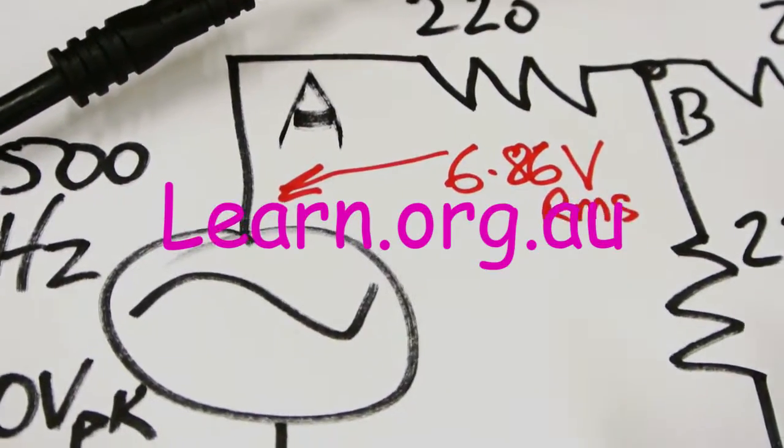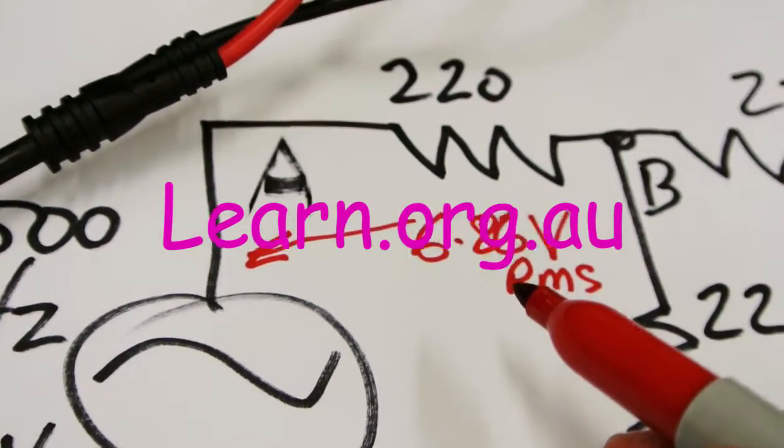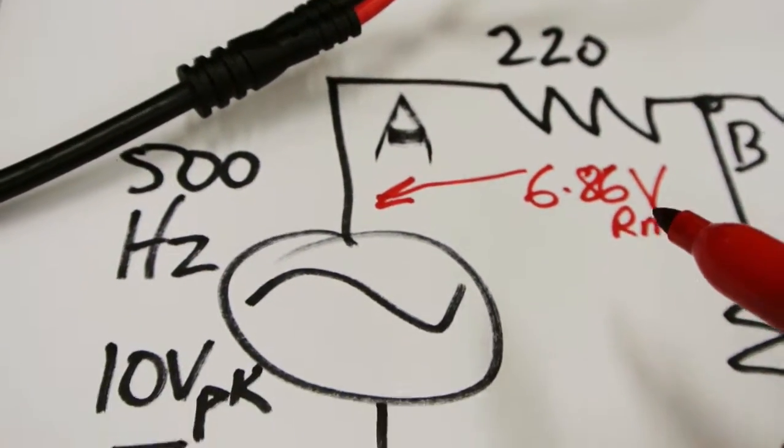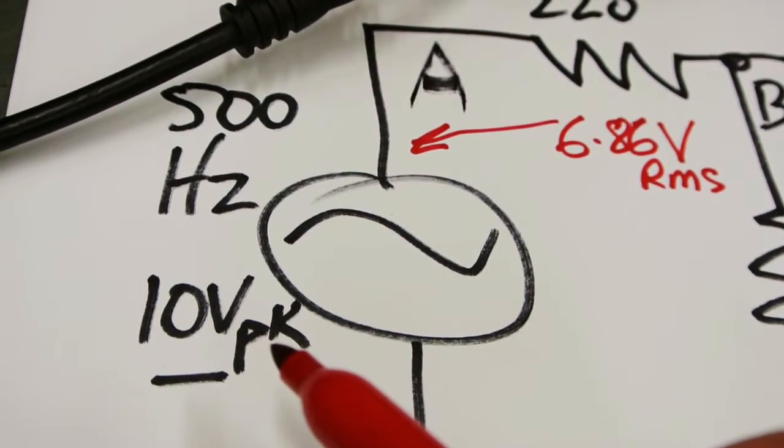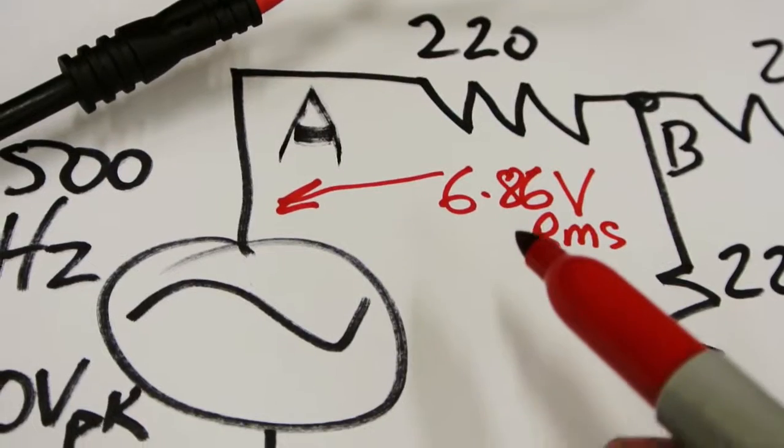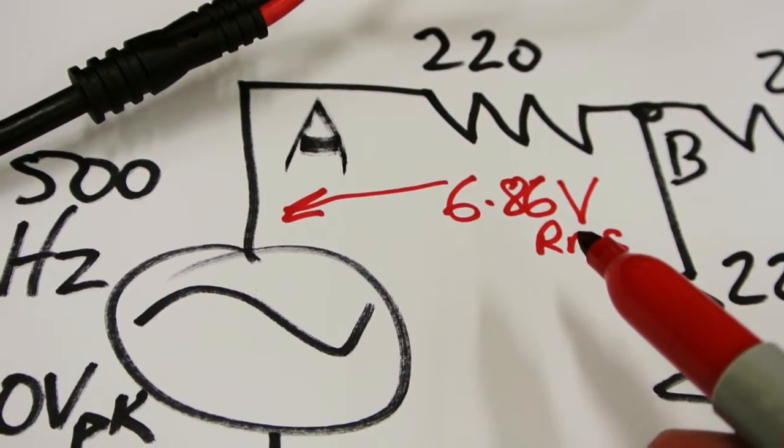So I've just recorded that first voltage. That is an RMS voltage being measured with the Fluke multimeter. We know that the signal generator was set to 10 volts peak, actually just a shade under 10 volts peak. And that's why we do not have the 7.07 volts that we expected to have there.